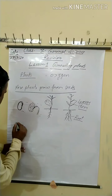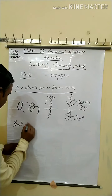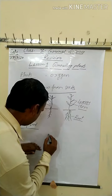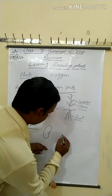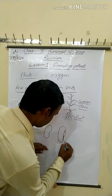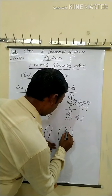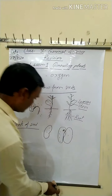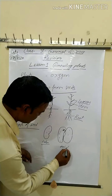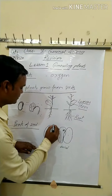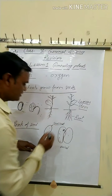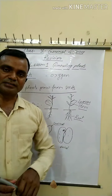Now the next topic: parts of seeds. See this diagram. The outer part of the seed is protected by a hard covering — this hard covering is called the seed coat. The seed coat protects the delicate organs — the small tiny plant inside.